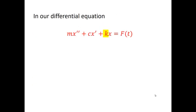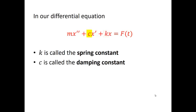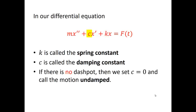Now in our differential equation, the K that we see here is called the spring constant. C is called the damping constant. If there is no dashpot, then we would set C equal to zero and say that the motion is undamped. If C is positive, then this is called damped motion.